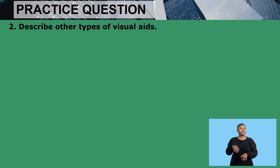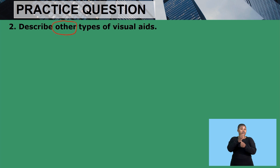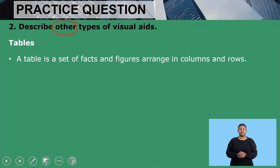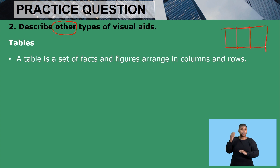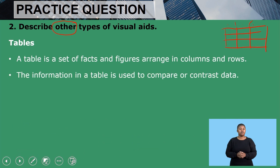Let's move on to the next question: describe other types of visual aids. Bear in mind that when the question says 'other types,' it means we must not include the one mentioned in question one. We have tables — a table is a set of figures arranged in columns and in rows. The information in the table is used to compare or contrast information.